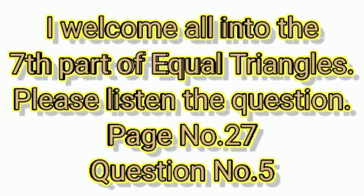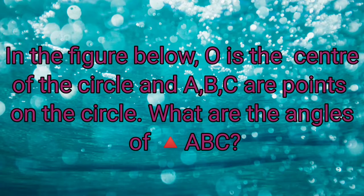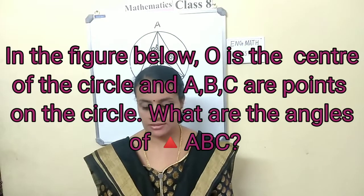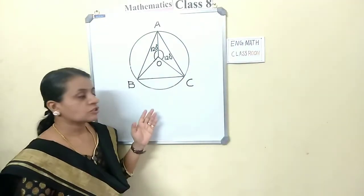Welcome to the seventh part of equal triangles. Please listen to the question: in the figure below, O is the center of the circle and A, B, C are points on the circle. What are the angles of triangle ABC?